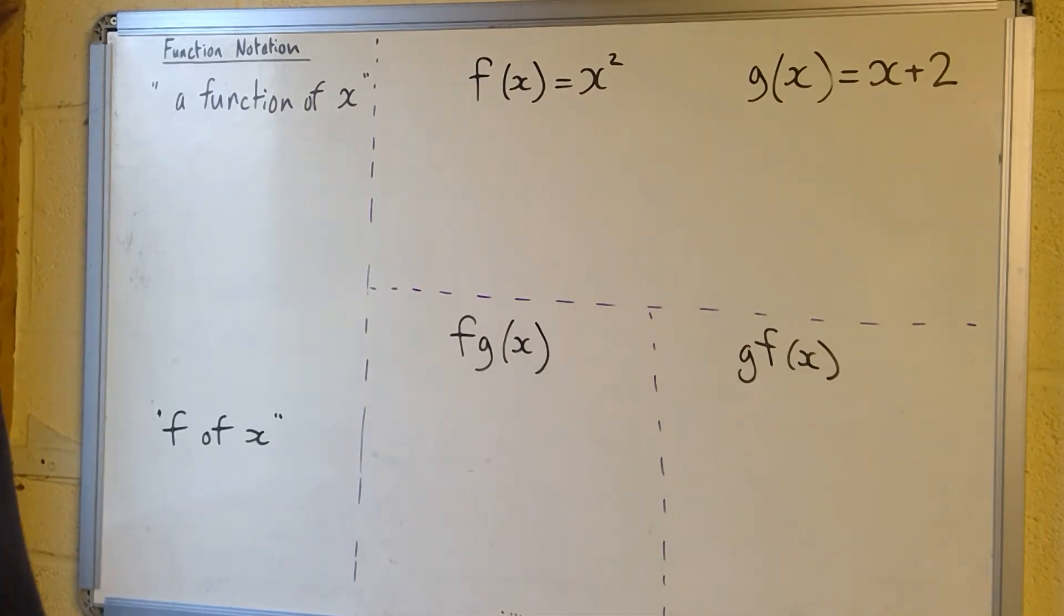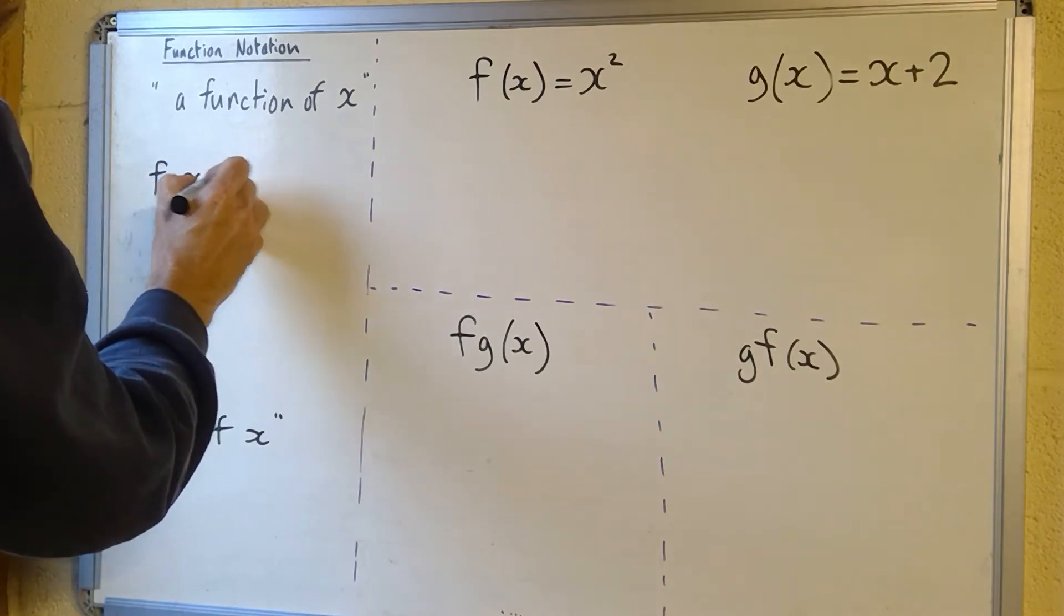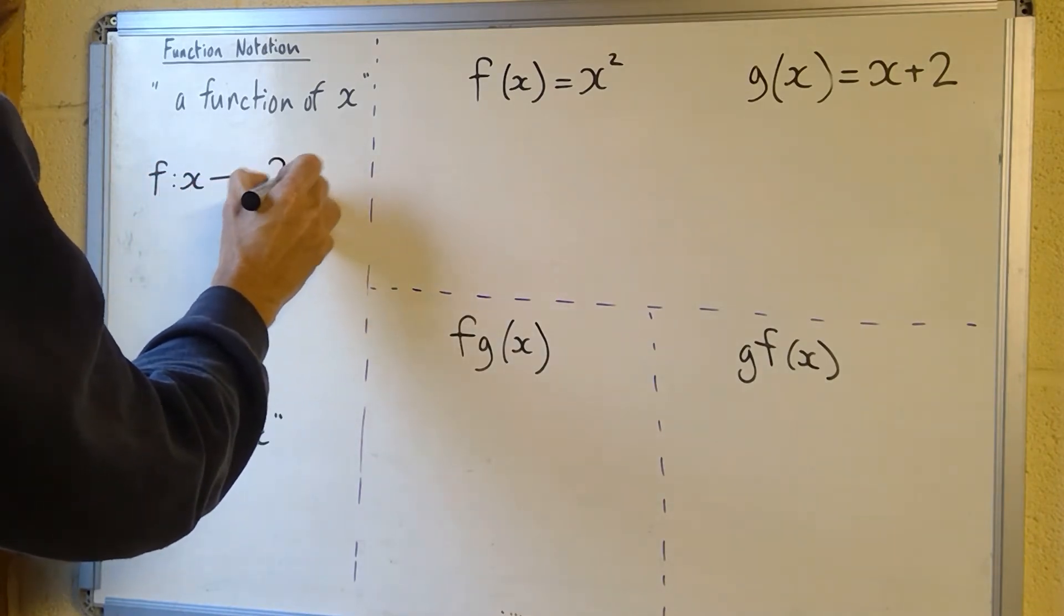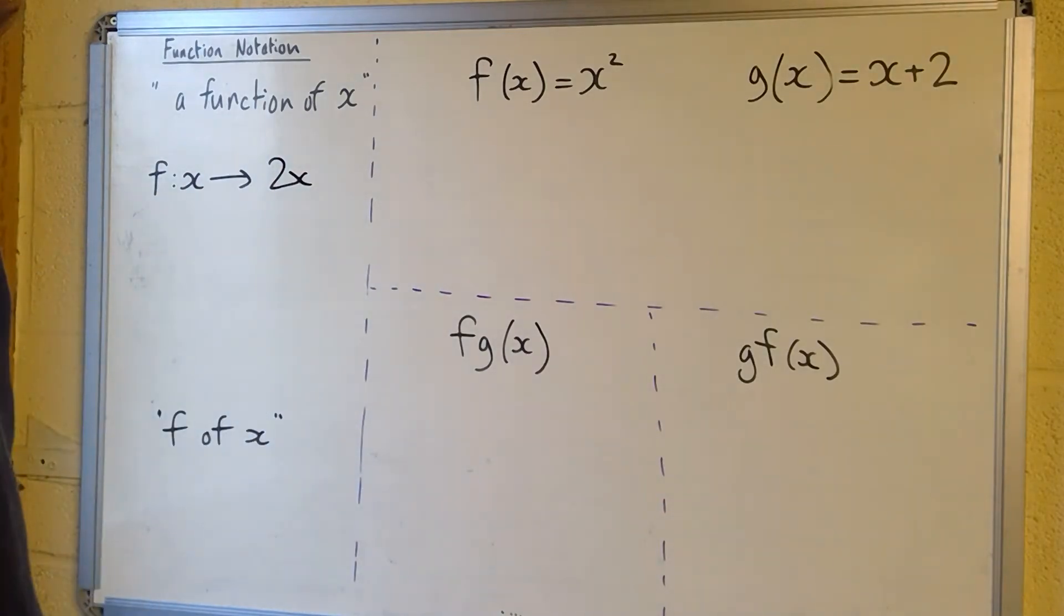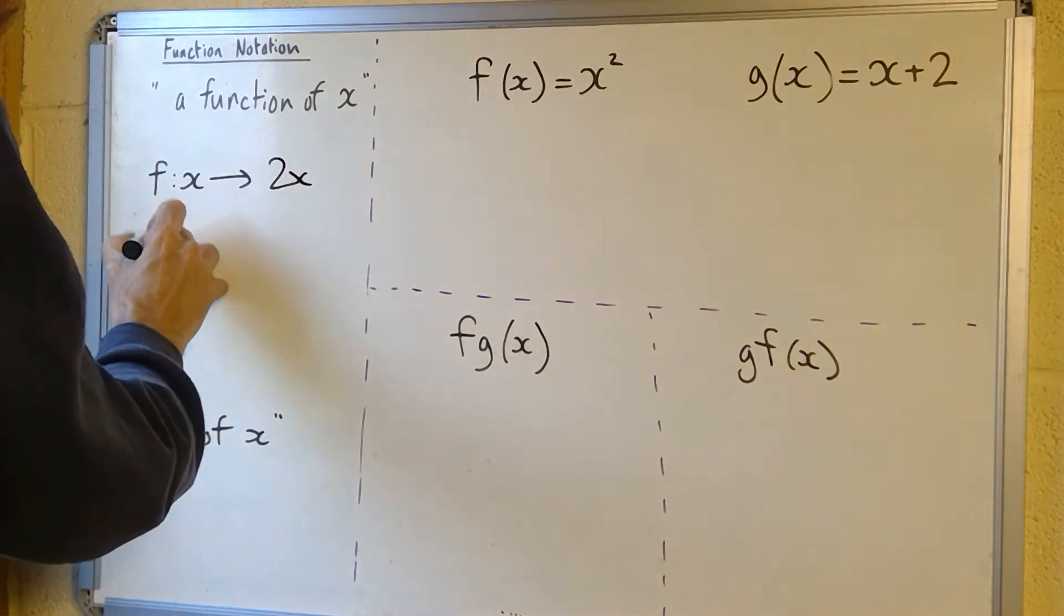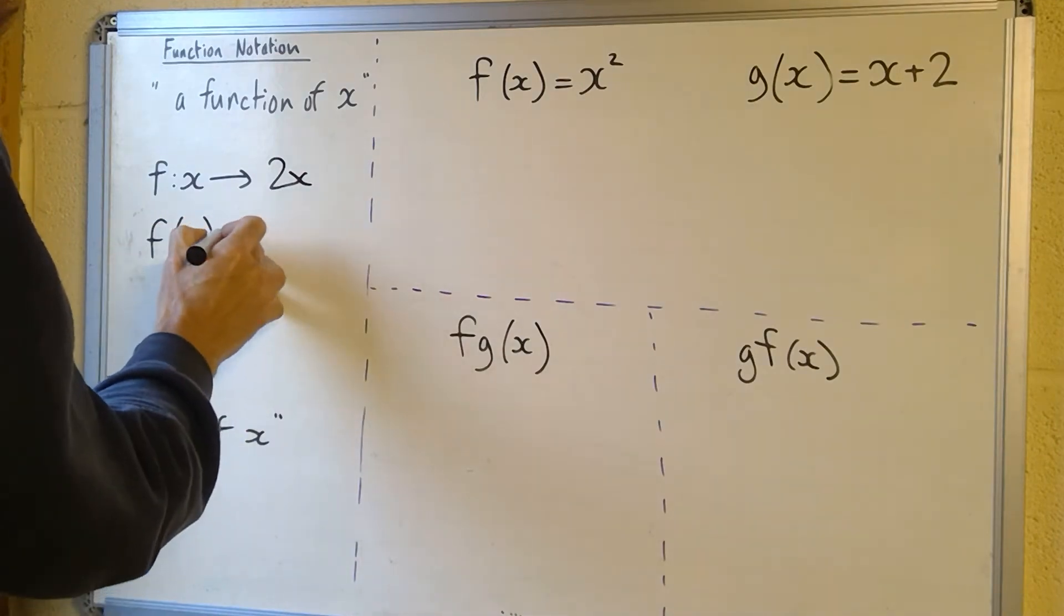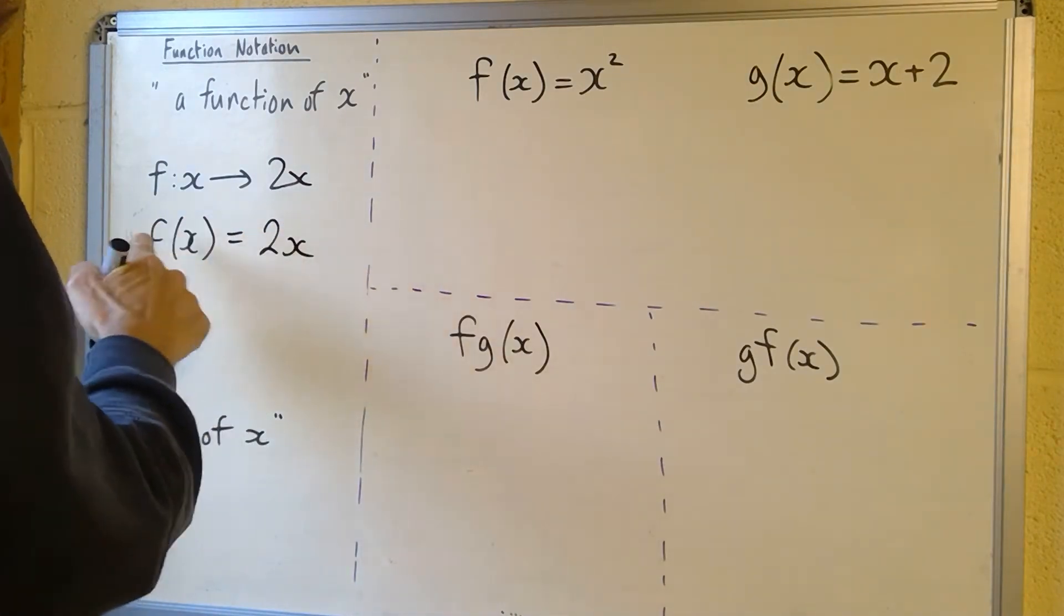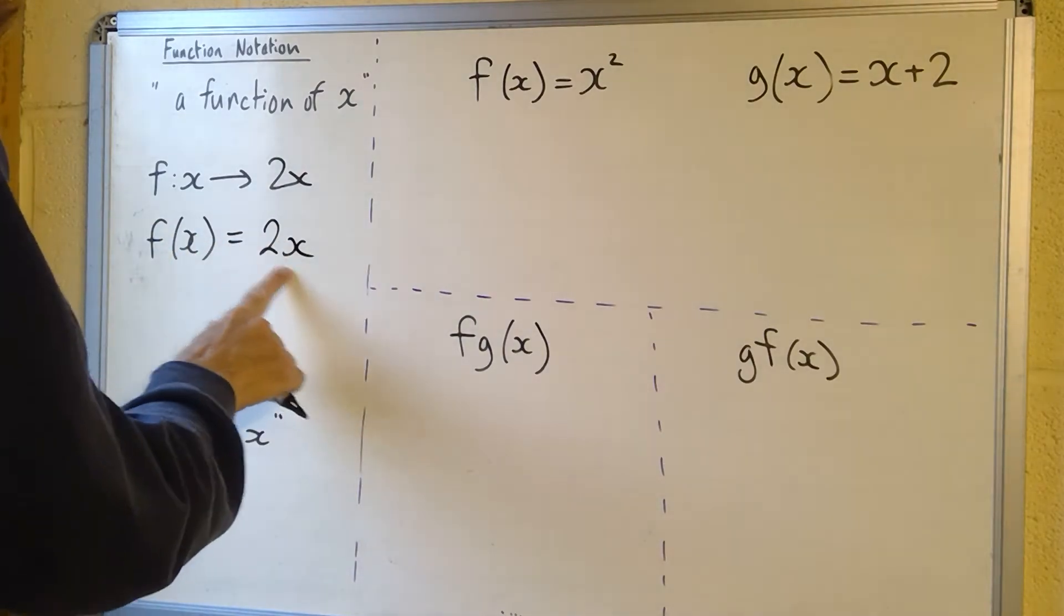There's a few different ways of writing it. Many of them use the letter f for function. So sometimes you see this notation f colon x to 2x, that would mean the function of x is 2x or double the x. Or you might see this notation more commonly f brackets x equals 2x, that means the same thing.